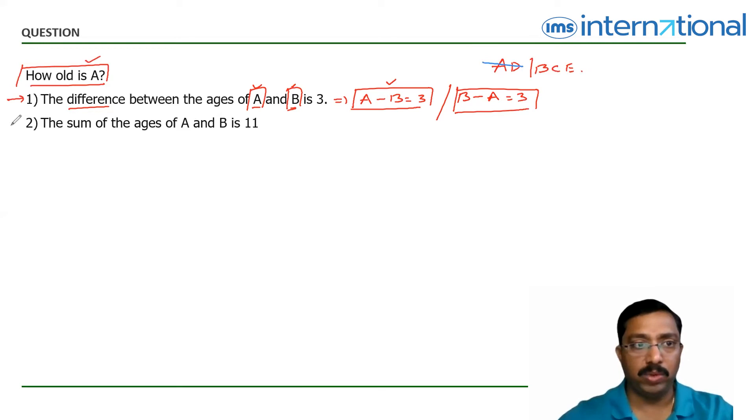Now, let's move into statement two. Let's treat the statement two alone. Here, it's given that the sum of ages A and B is 11. You can write this as A plus B is equal to 11. It doesn't matter whether B plus A, even if you write it B plus A, it's all the same. A plus B equal to 11.